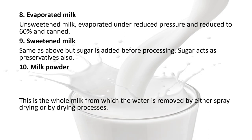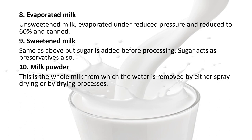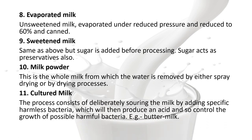Milk powder: this is whole milk from which the water is removed by either spray drying or roller drying processes. Cultured milk: the process consists of deliberately souring the milk by adding specific harmless bacteria which produce an acid and so control the growth of possible harmful bacteria — e.g., buttermilk.